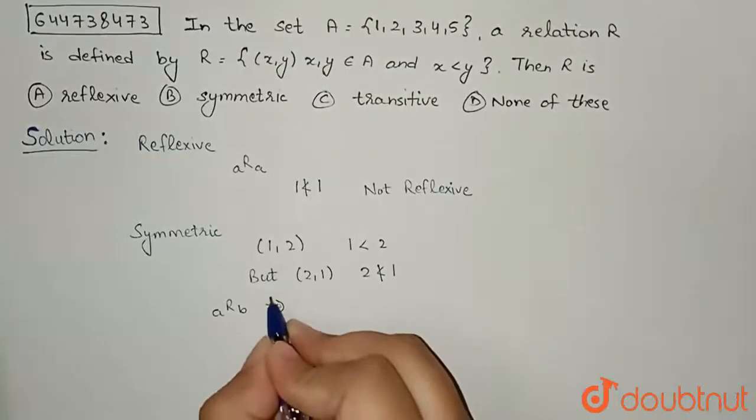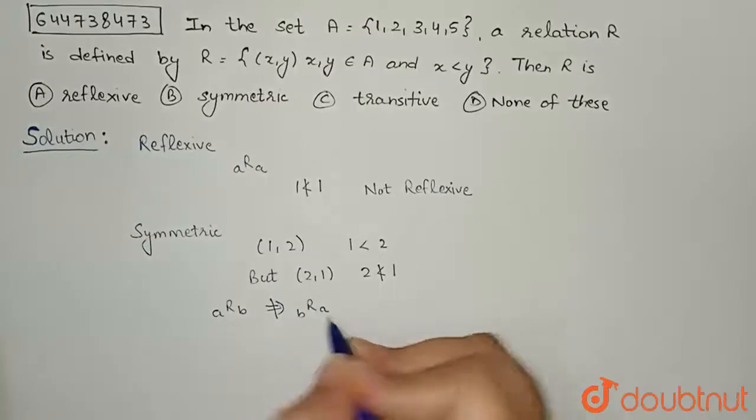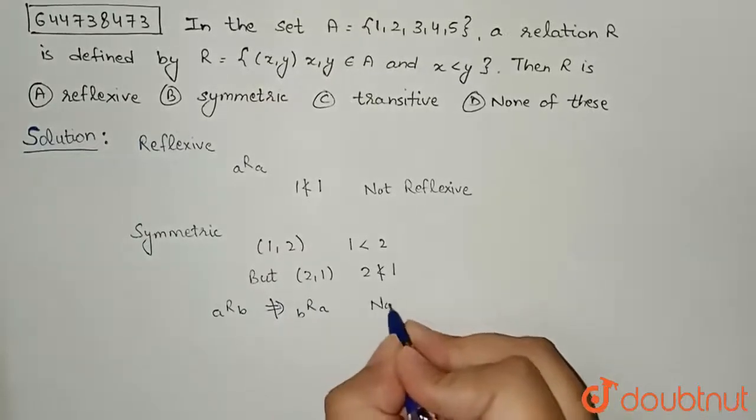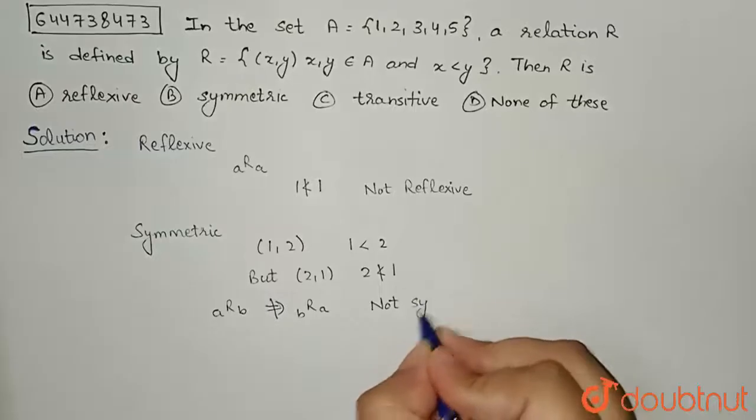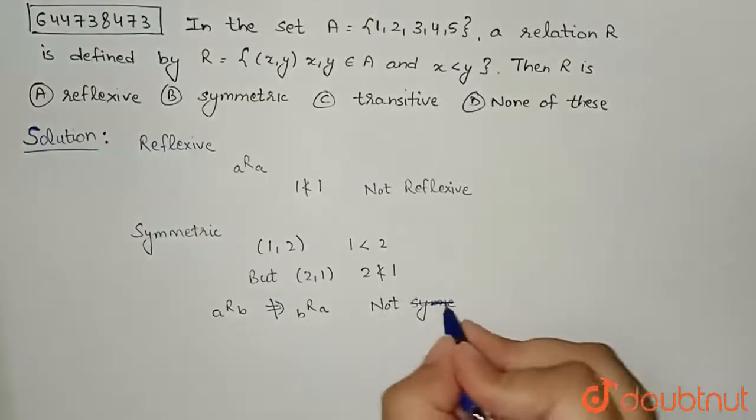But this does not imply b is related to a. This implies that our relation R is not symmetric.